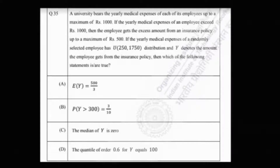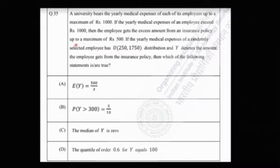The problem says that a university bears the yearly medical expenses of each of its employees up to a maximum of rupees 1000. If the yearly medical expenses exceed rupees 1000, the employee gets the excess amount from an insurance policy up to a maximum of rupees 500. The yearly medical expenses of a randomly selected employee follow a uniform distribution over the interval 250 to 1750, and Y denotes the amount the employee gets from the insurance policy. It is a multiple select question — more than one option may be correct.